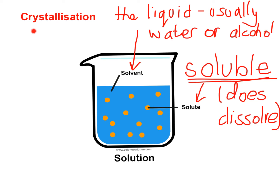The second process we need to know about is crystallization, and that's how we can separate the different components of a solution. Just as a quick reminder, a solution is a mixture where we have a solvent — a liquid, usually water or alcohol — and mixed into the solvent we've got the solute, which is soluble, so it does dissolve. Really good examples of solutes are sugar, salt, and copper sulfate. When we put those two together, we form a solution.